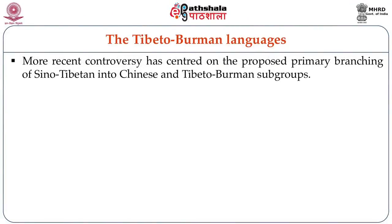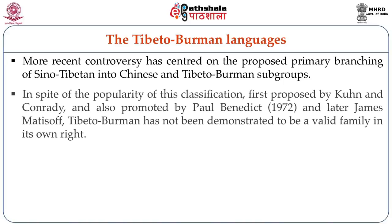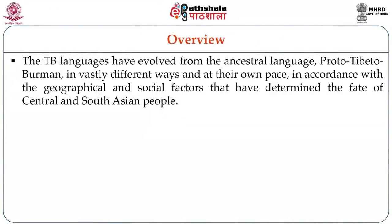More recent controversy has centered on the proposed primary branching of Sino-Tibetan into Chinese and Tibeto-Burman subgroups. In spite of the popularity of this classification, first proposed by Kuhn and Conradi and also promoted by Paul Benedict in 1972 and later James Matisoff, Tibeto-Burman has not been demonstrated to be a valid family in its own right. The Tibeto-Burman languages have evolved from the ancestral language, Proto-Tibeto-Burman, in vastly different ways and at their own pace, in accordance with geographical and social contexts, both in Central and Southern Asia.